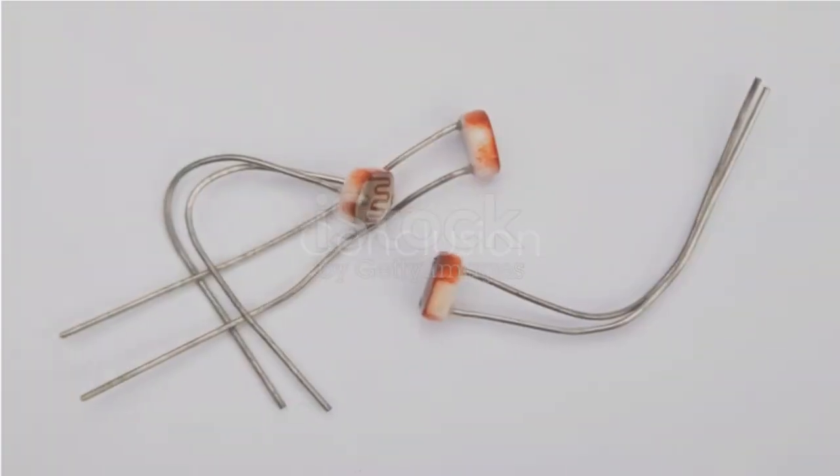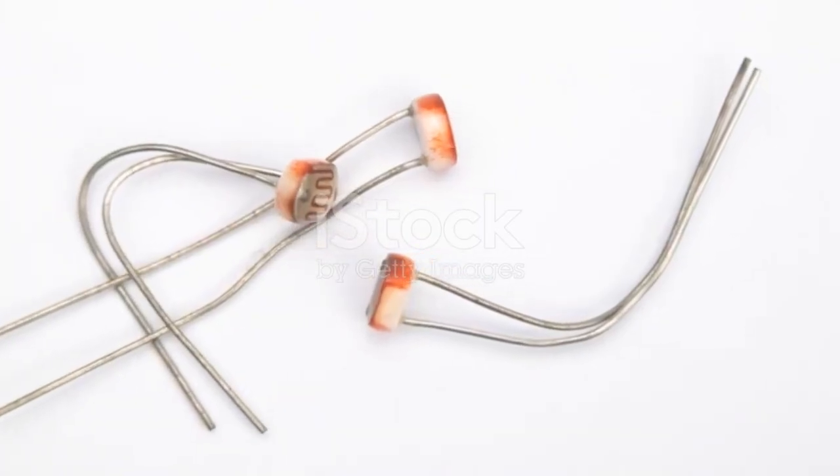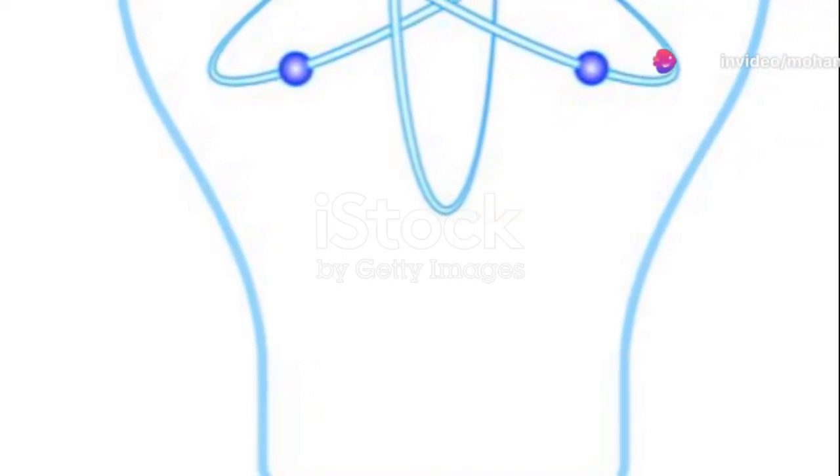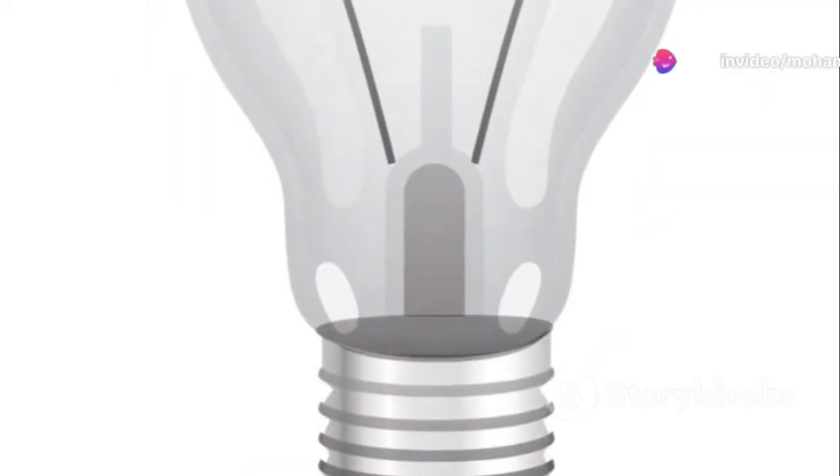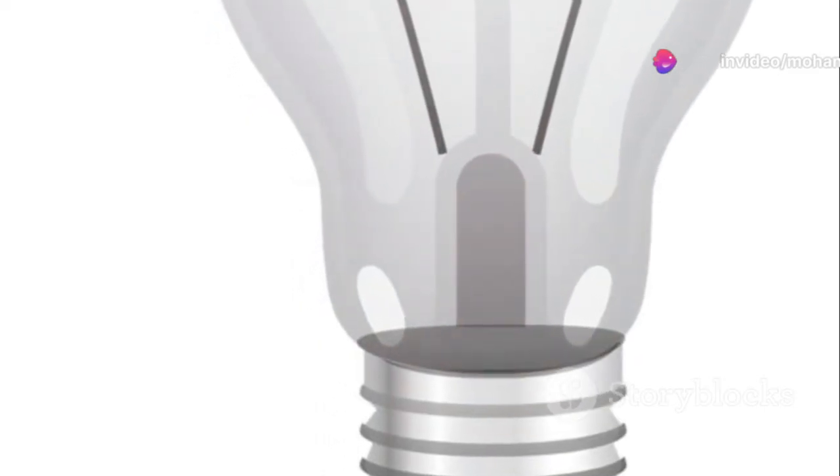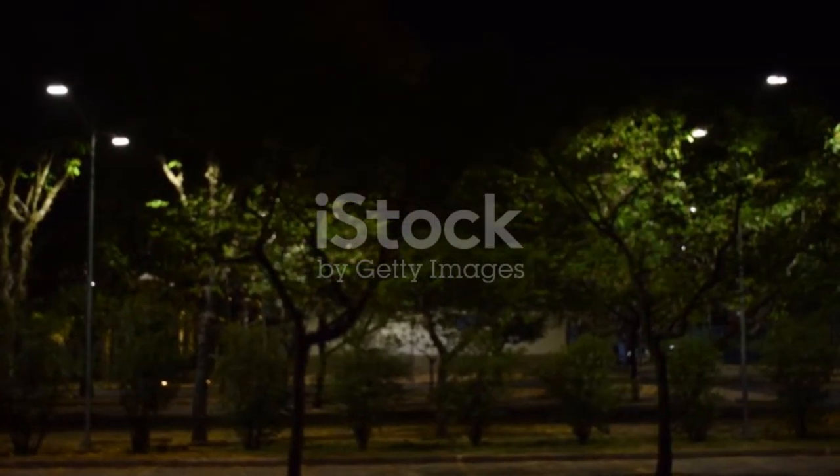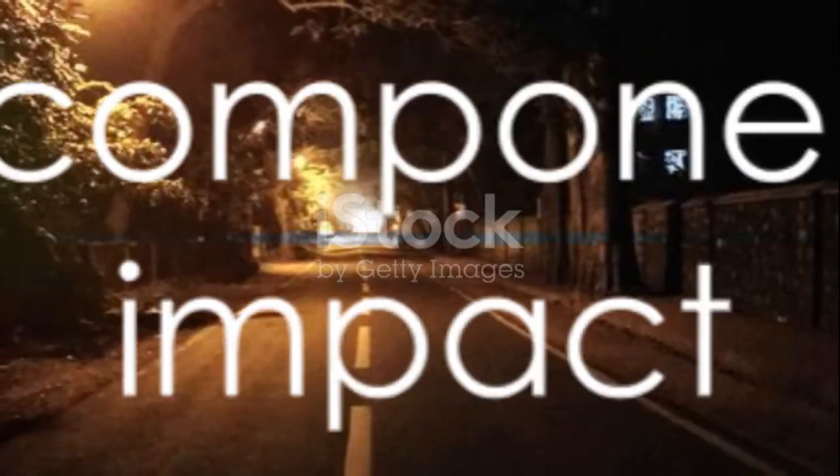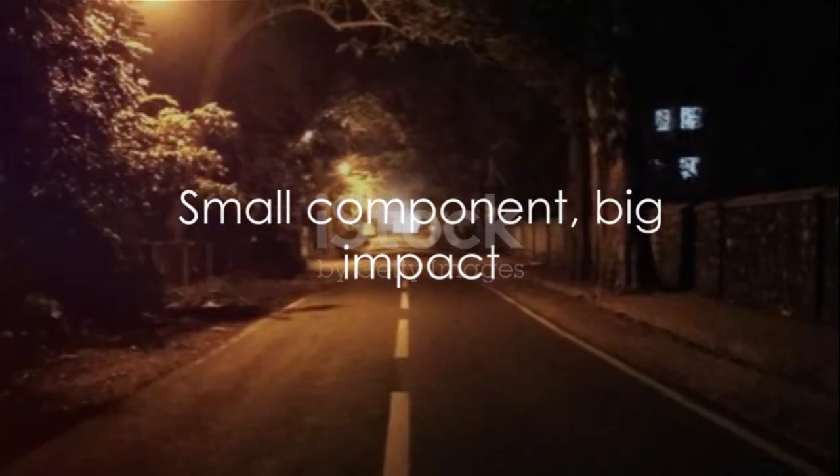So to wrap things up, we've learned about the light-dependent resistor, often referred to as an LDR. This remarkable little device varies its electrical resistance based on the level of light it's exposed to, a principle known as photoconductivity. It's this ability that makes it a key player in devices like automatic street lights, solar light detectors, and various alarm systems. Isn't it amazing how such a small component can have such a big impact?